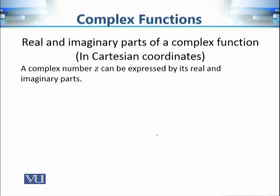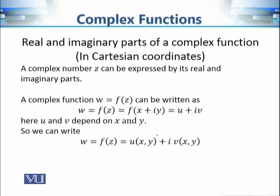We know that any complex number can be written as x + iy, where x and y are real numbers and i is the square root of minus 1. So when we apply a function to a complex number x + iy, we get another complex number — let's say u + iv. Whenever we change x and y, the values of u and v will change.